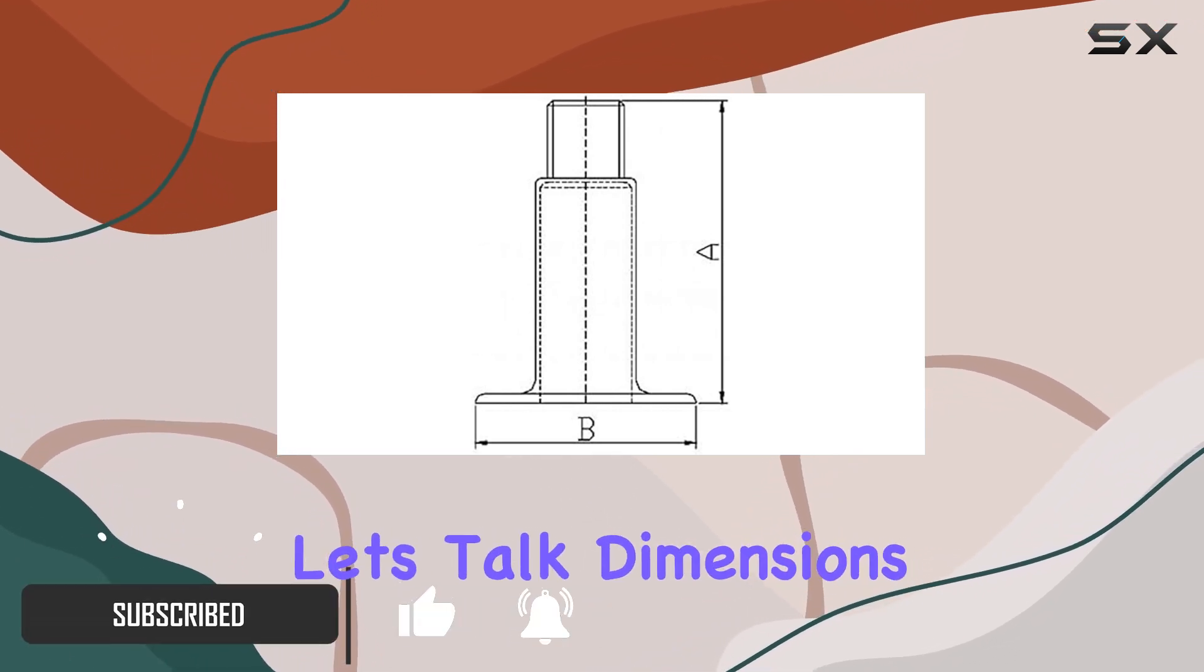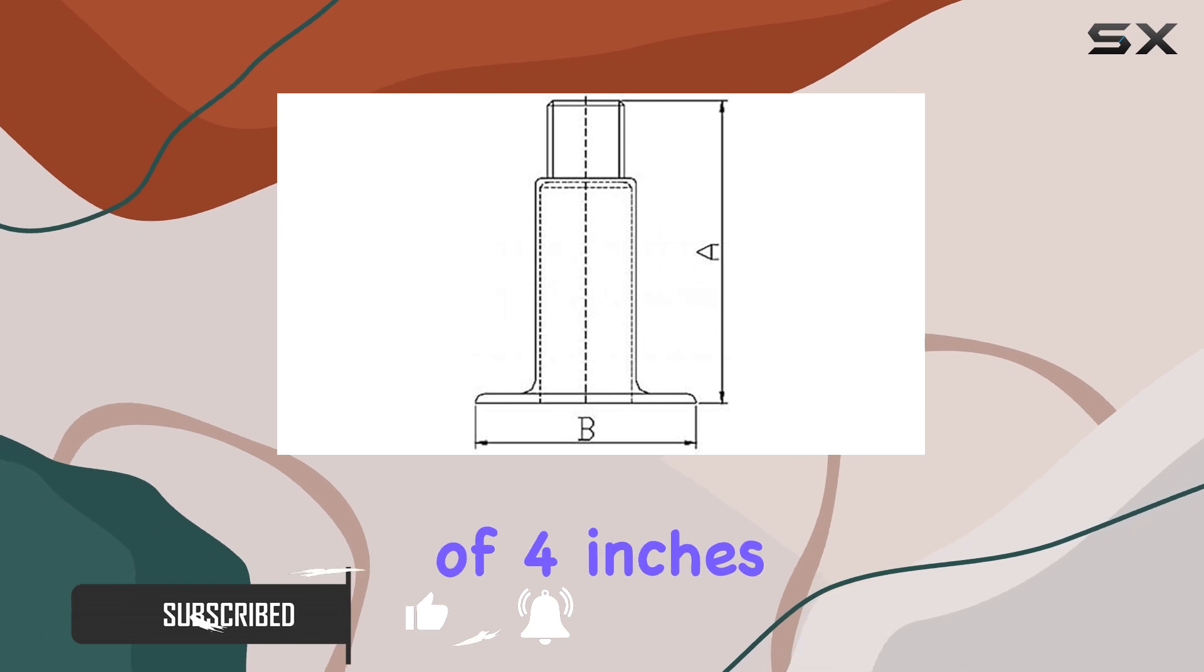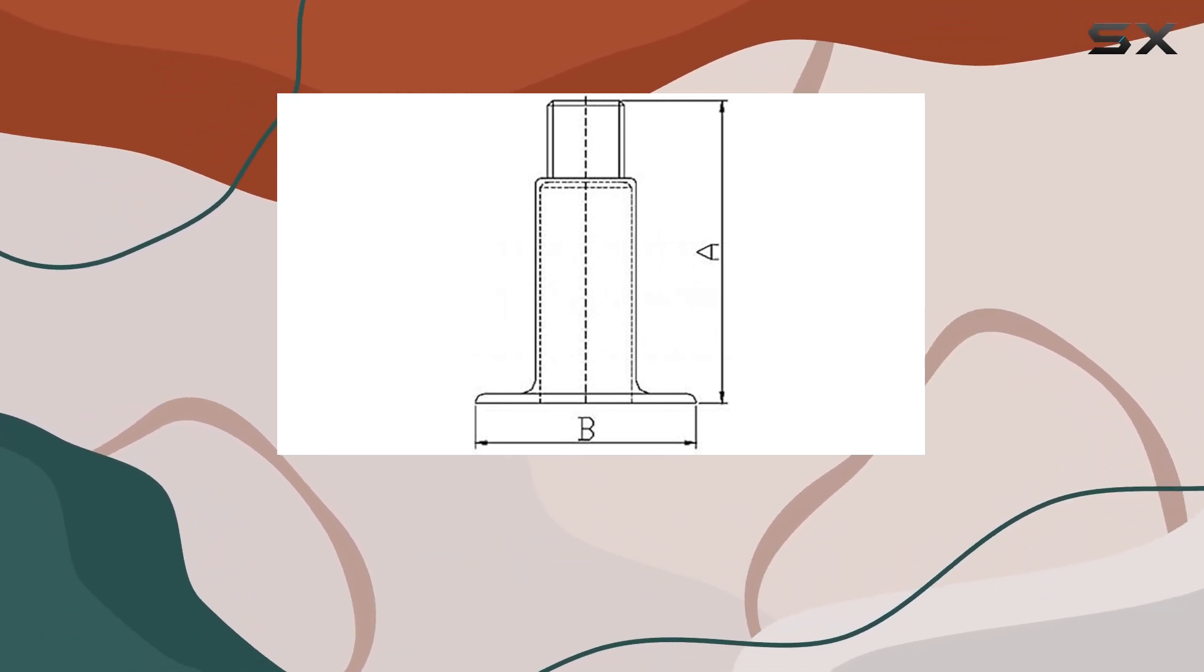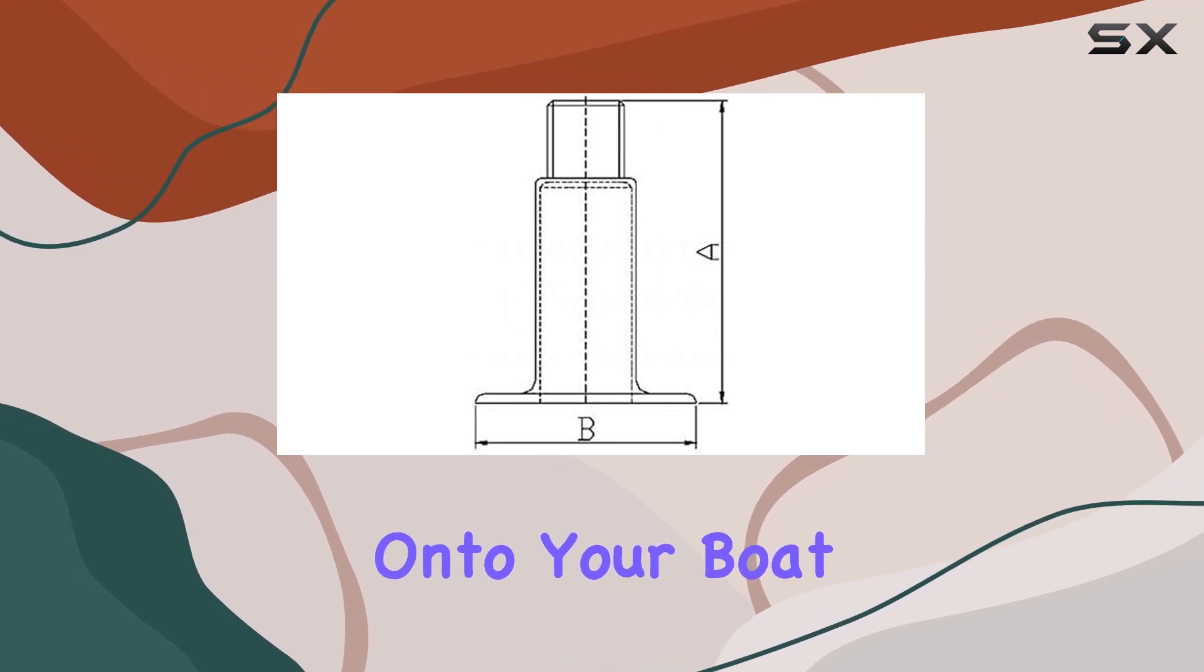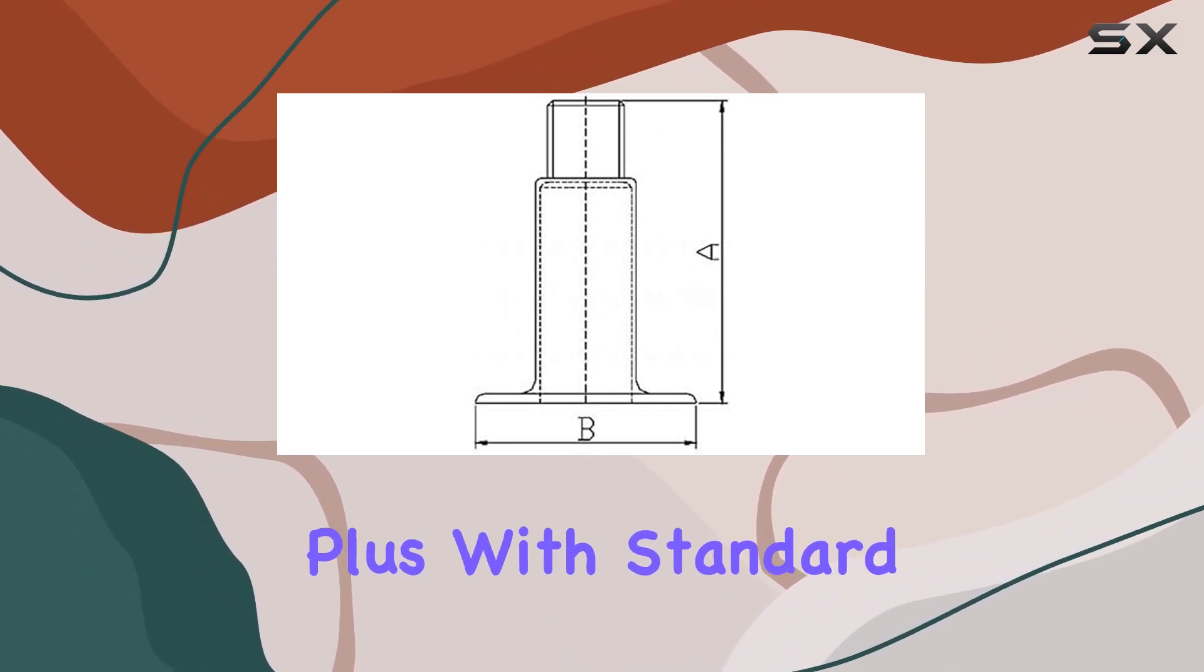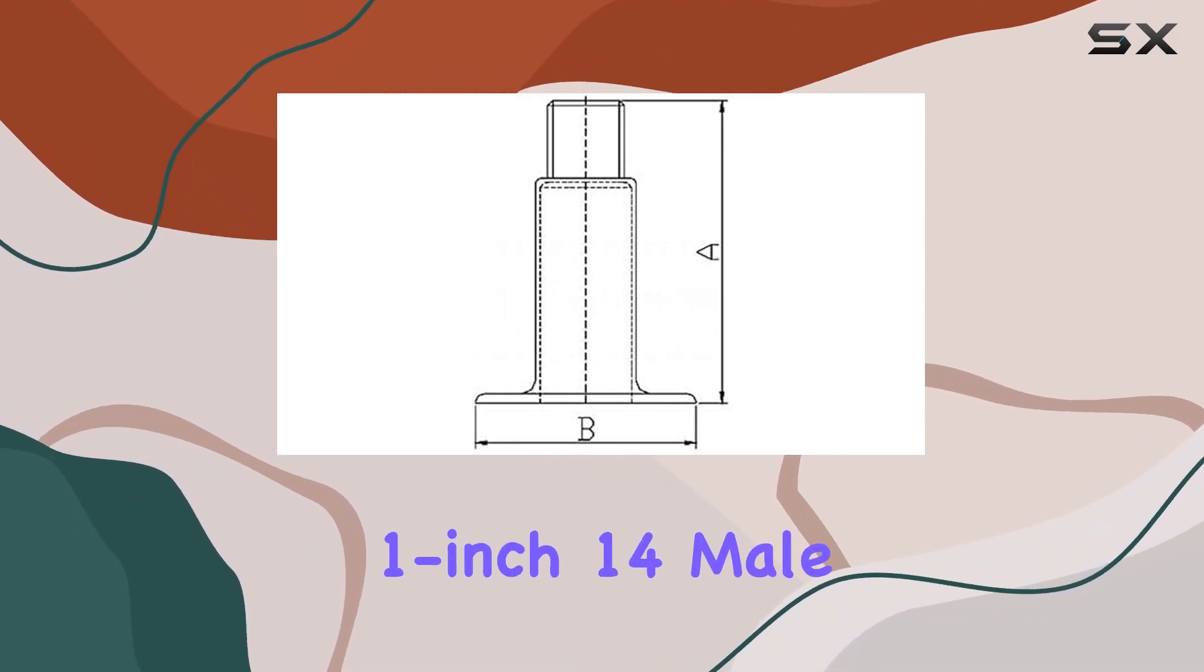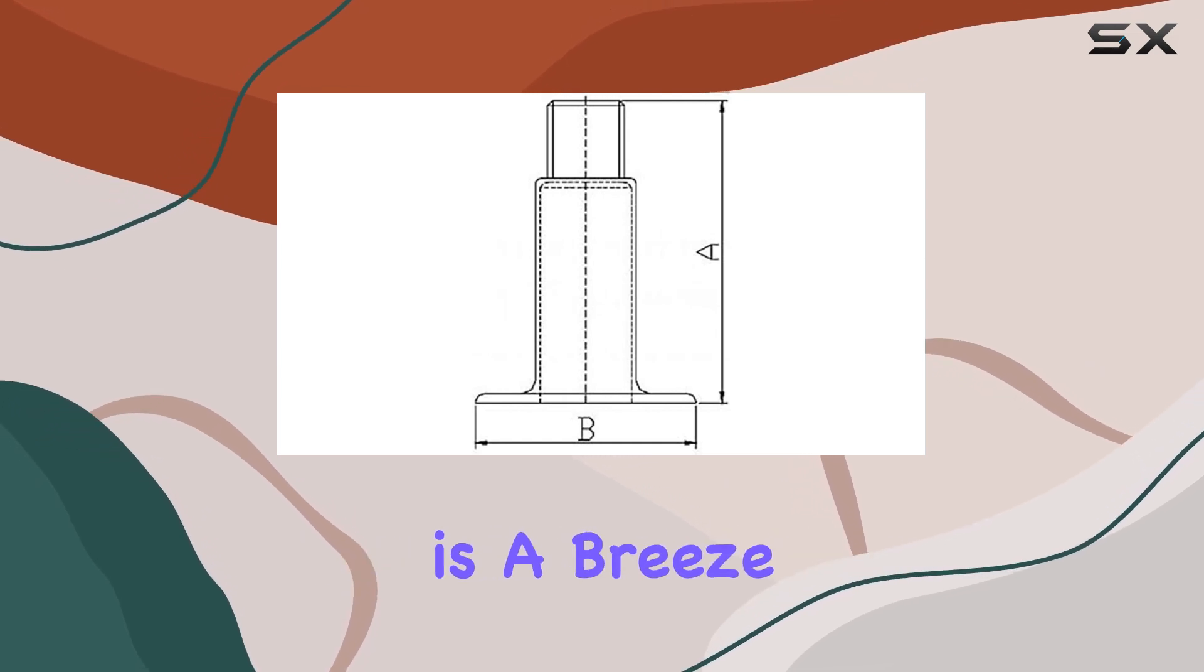Let's talk dimensions. With a diameter of 4 inches (that's A) and a height of 2 7/8 inches (that's B), it fits snugly onto your boat without hogging too much space. Plus, with standard 1-inch 14 male threads, installation is a breeze.